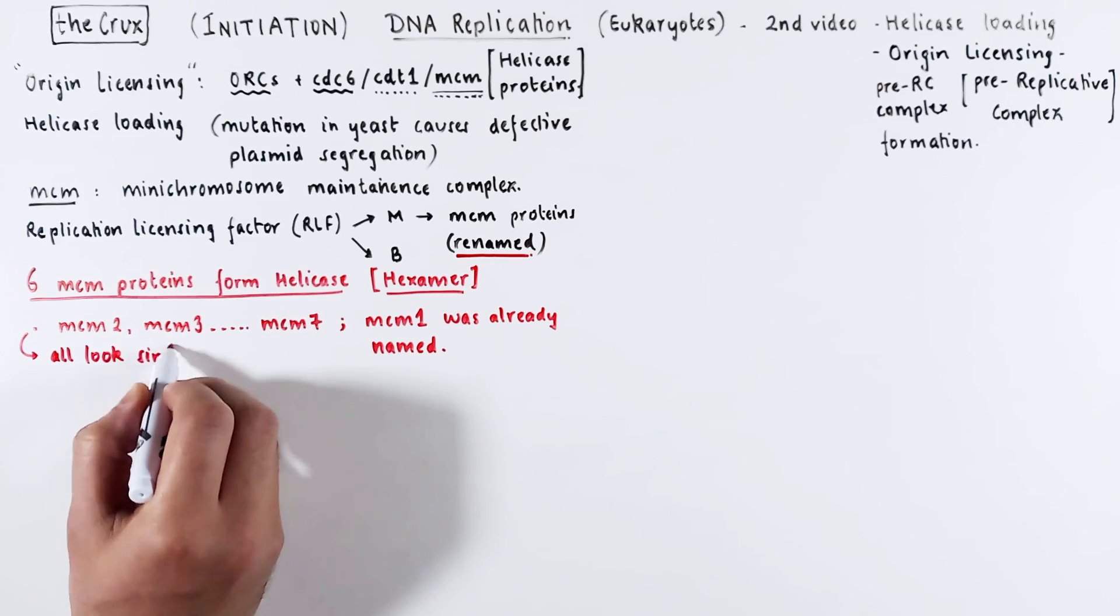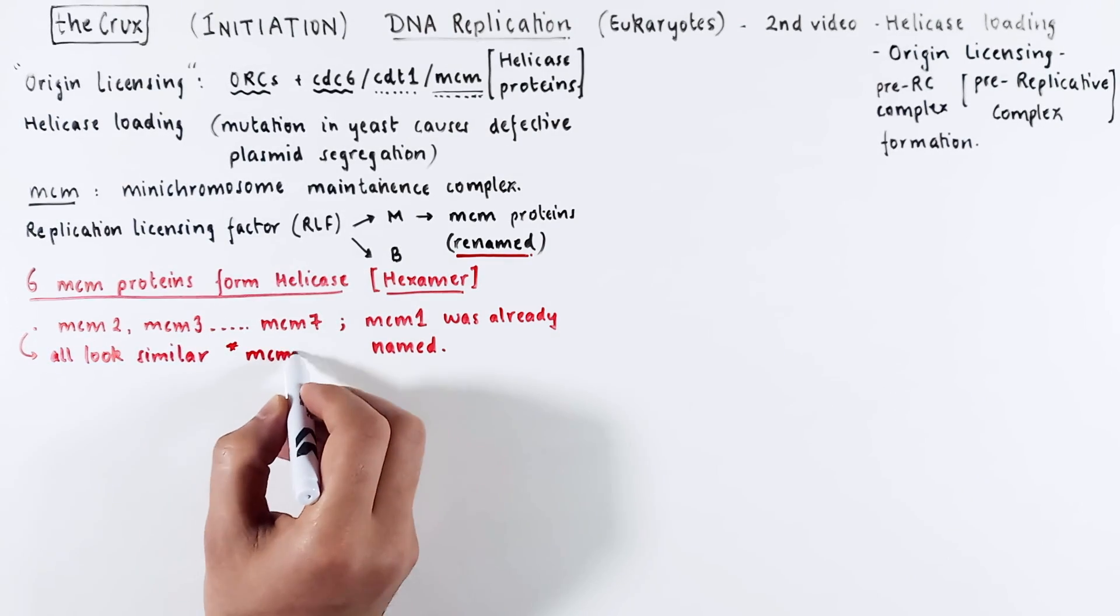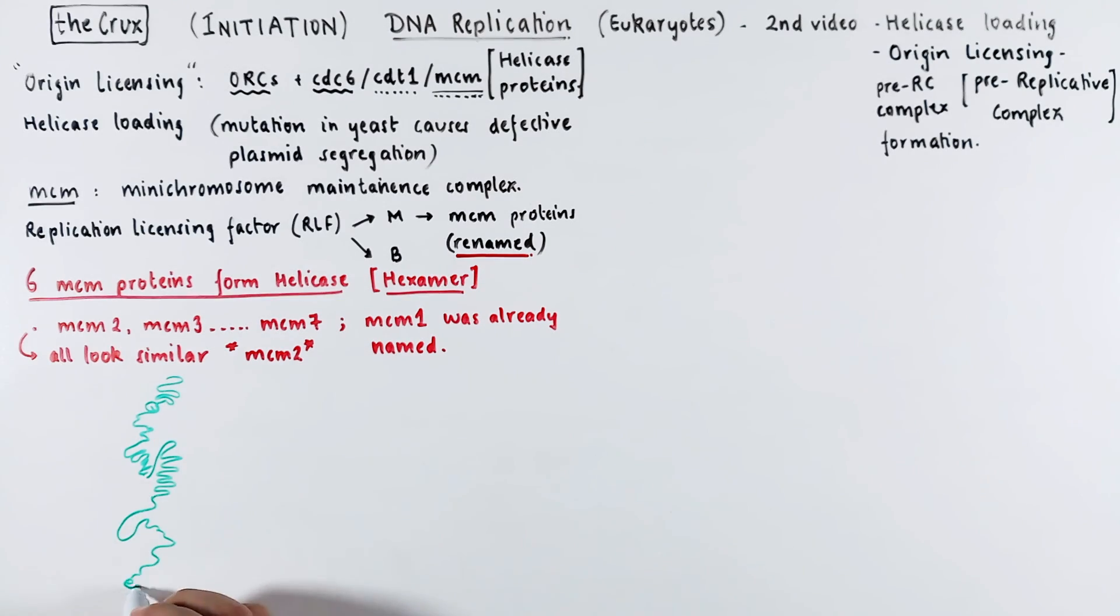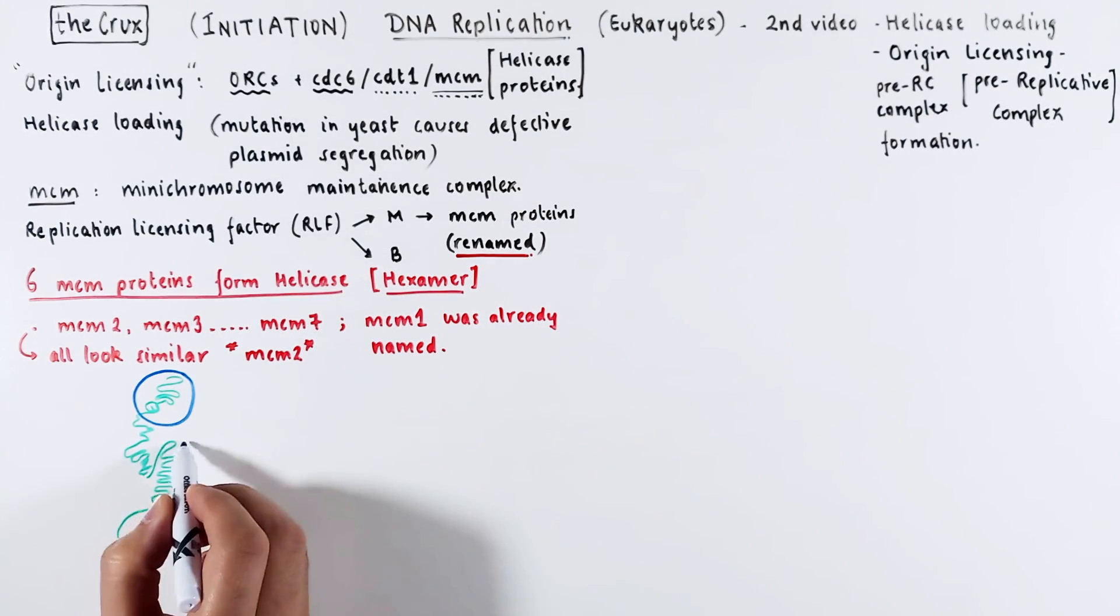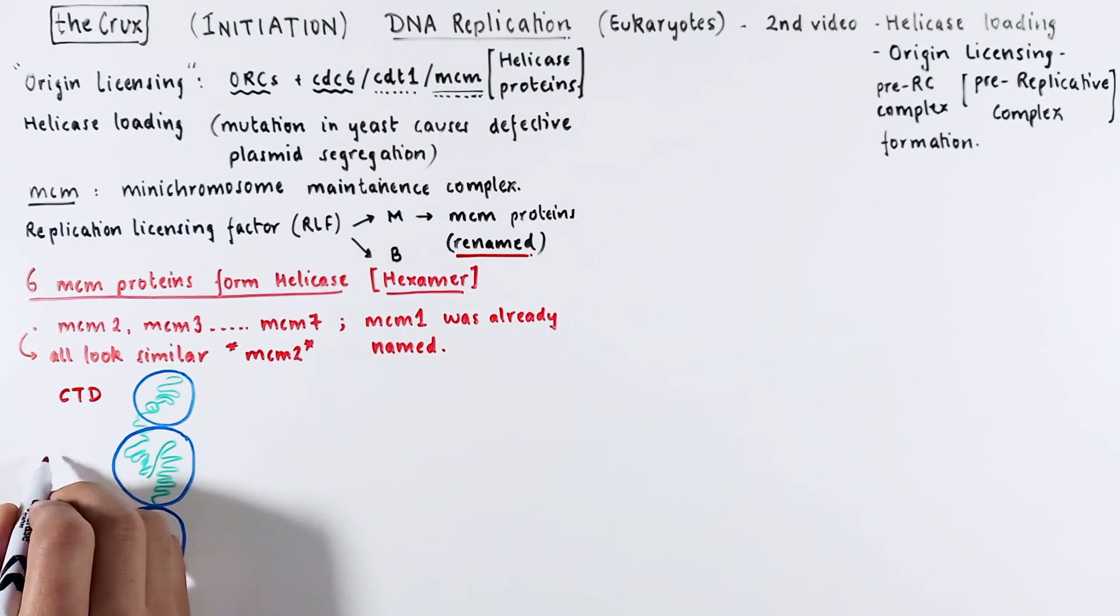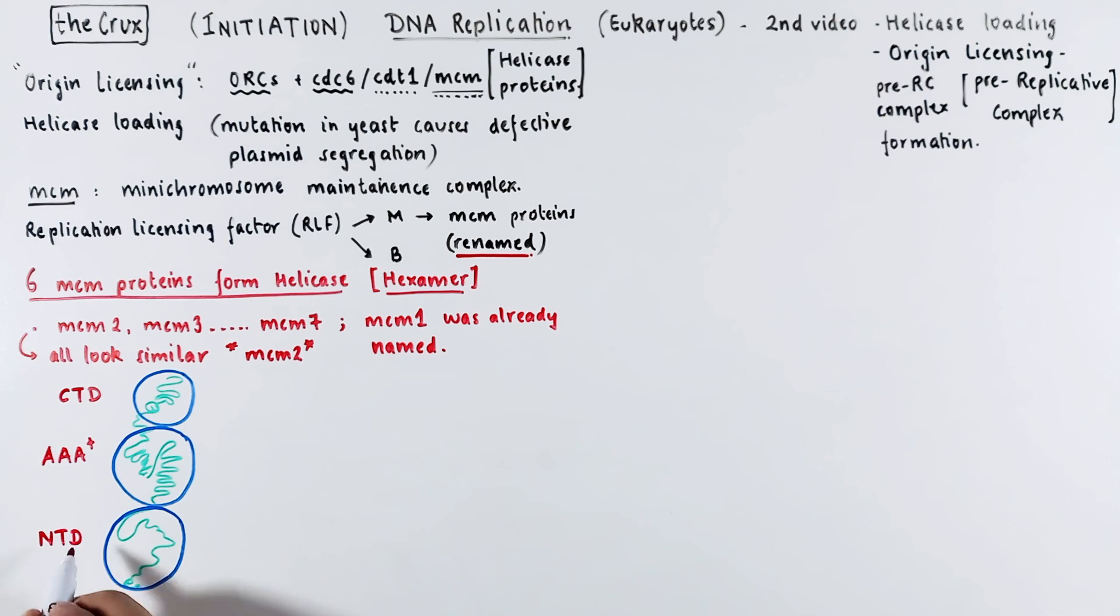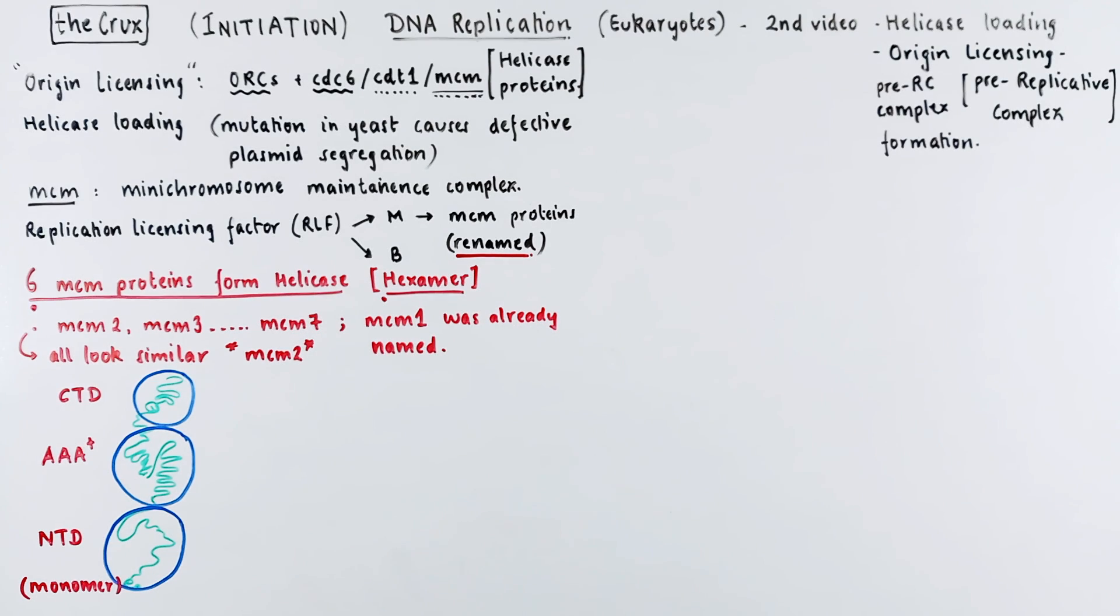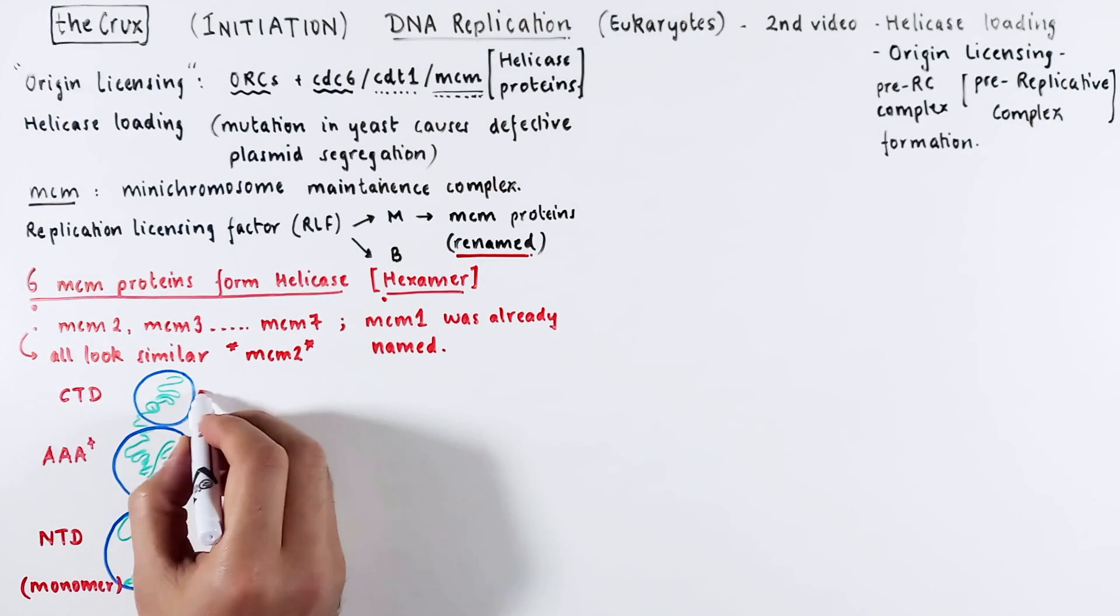In any case, all these MCM proteins look pretty similar except for MCM2. A general structure of the monomer is something like this. It has got three discrete domains. The C-terminal domain, the middle ATPase domain, and the N-terminal domain. This is the monomer and six of these make up the helicase hexamer. Let's see what these are capable of.